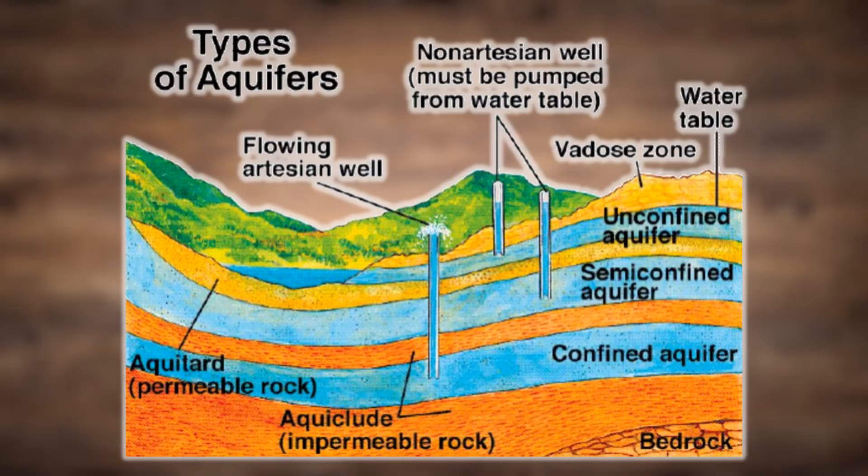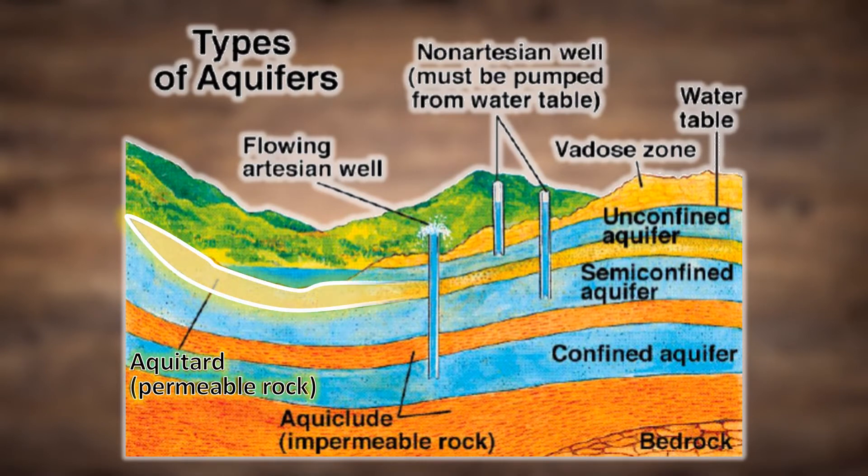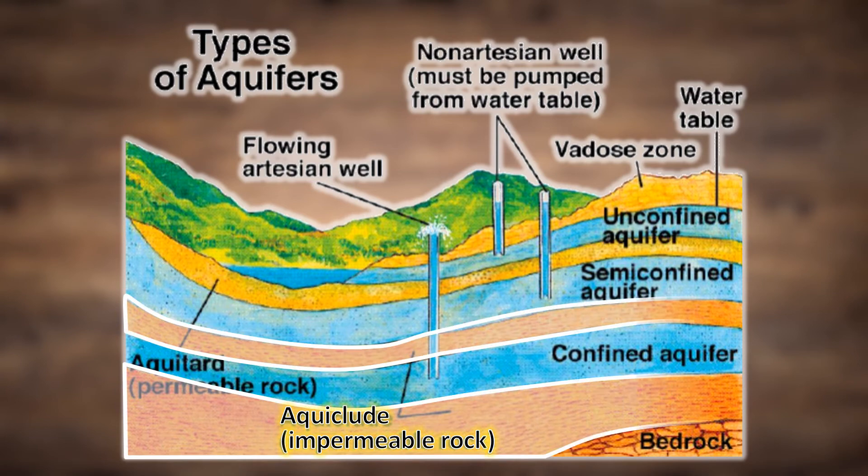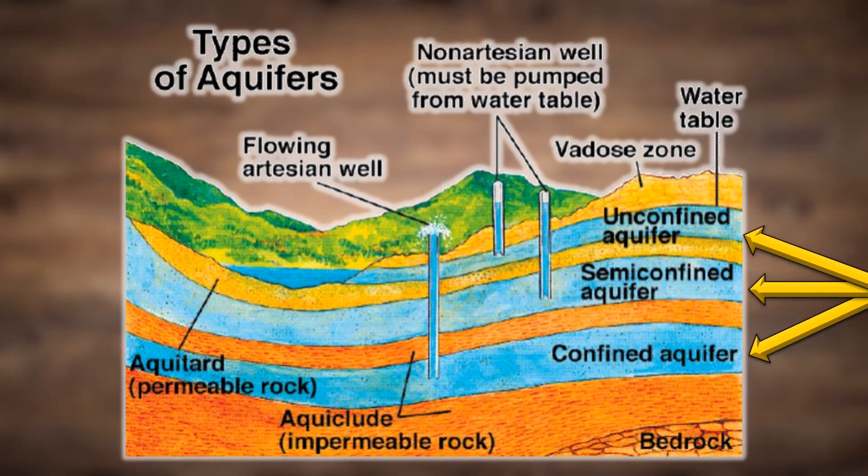As seen in this diagram of the different types of aquifers, you've got some aquifers divided by a permeable aquitard, and some aquifers divided by an impermeable aquacludes. This creates three different kinds of aquifers.